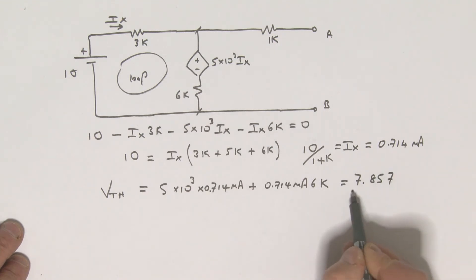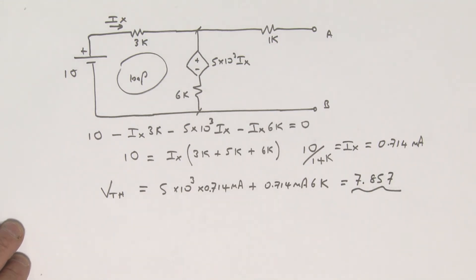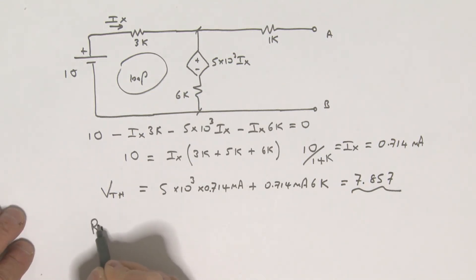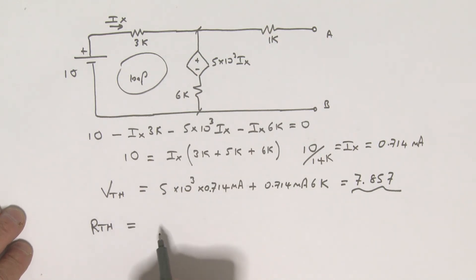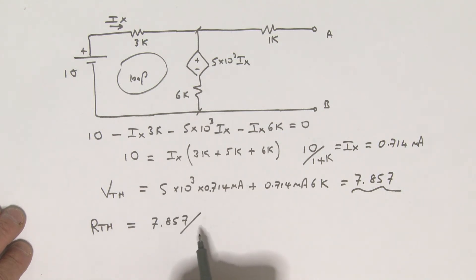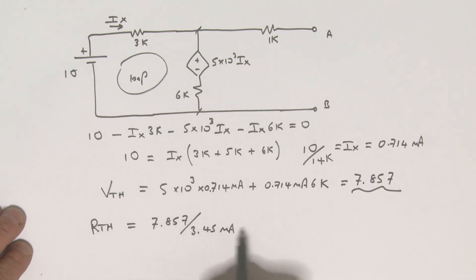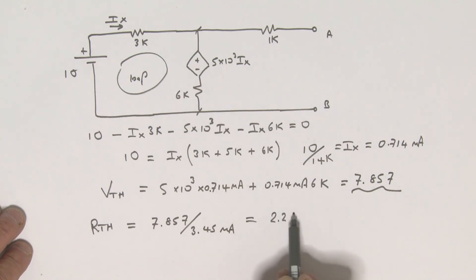Working that out, the Thevenin voltage comes to 7.857 volts (with some rounding). Now with the short-circuit current and Thevenin voltage known, the Thevenin resistance is R_Thevenin = V_Thevenin / I_sc = 7.857 V / 3.45 mA = 2.28 kΩ.